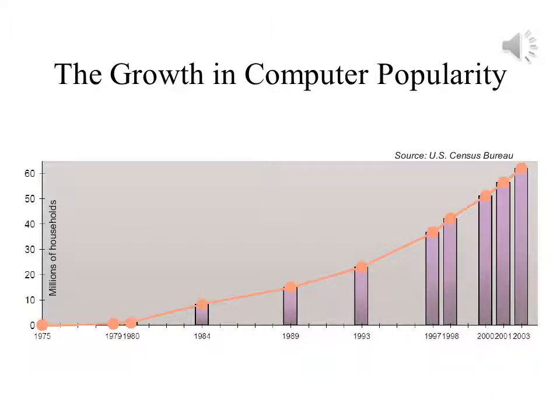The graph that you see shows how popular computers have become in American households. In 1975, the year when the first small computer, the MITS Altair, first appeared on the cover of Popular Electronics, there were close to zero households with computers. It wasn't until 1984 that there were 10 million households with a computer, but by 2003, there were over 16 million households with computers.